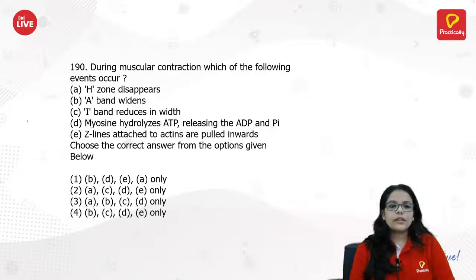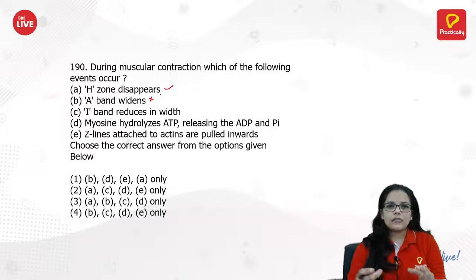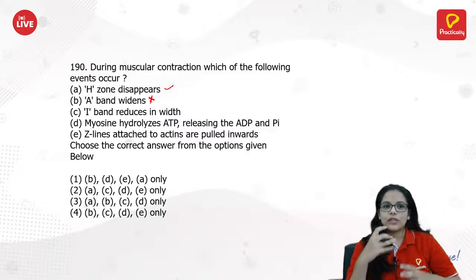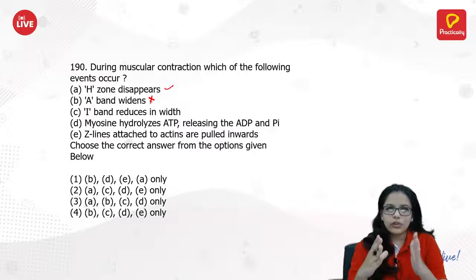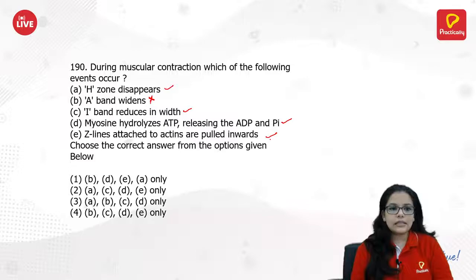During muscular contraction, which of the following occurs? The H zone disappears — yes. A band widens — no, it mostly remains the same size or can become shorter but never widens. I band reduces its width. Myosin hydrolyzes ATP and releases ADP and inorganic phosphate. Z lines attached to actin are pulled inwards. So A, C, D, E are correct.